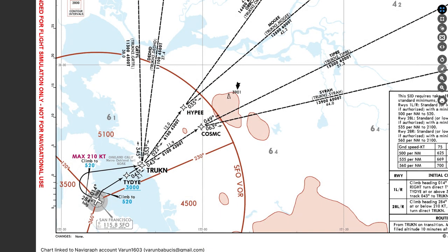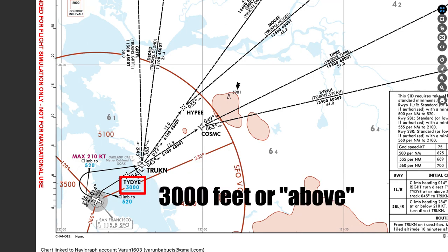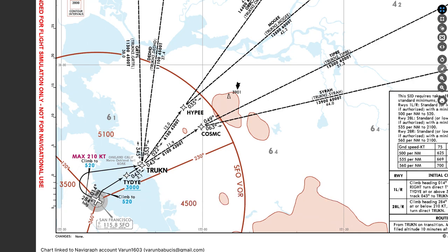Several people pointed out that I made an error reading the departure procedure at San Francisco, where I said a constraint was 3,000 feet or below — it actually is 3,000 feet or above. The concept I was explaining still applies, but it's my job as a content creator to prevent you from learning the wrong thing, so I put it in the video regardless. Now that we're done with the formalities, let's jump into the flight deck.